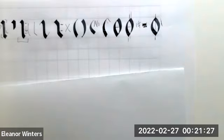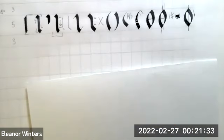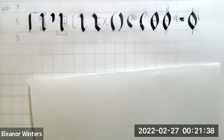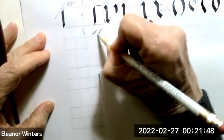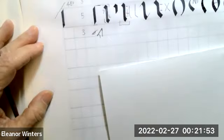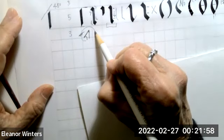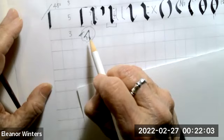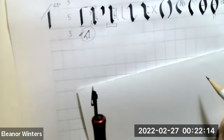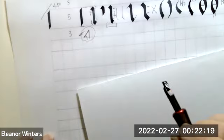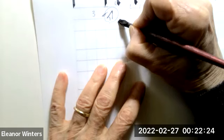One more detail before we make letters: this alphabet is characterized by a serif, and the serif is very Johnstonian — a form Edward Johnston developed. You'll see similar forms in English Carolingian manuscripts, but we associate this shape with Gothicized Italic and Foundational, both Edward Johnston alphabets. The serif is used at the top of ascenders and the top of some minuscule letters. Rather than starting an L without a serif, I want to give it a serif.